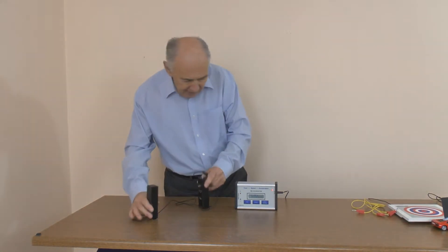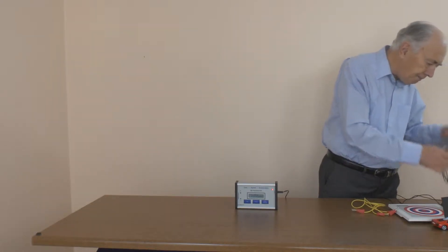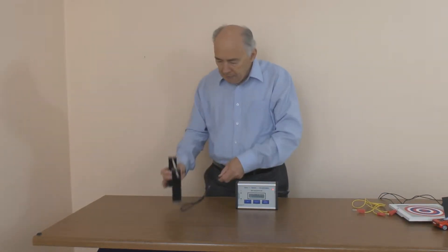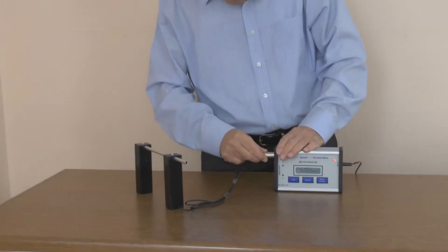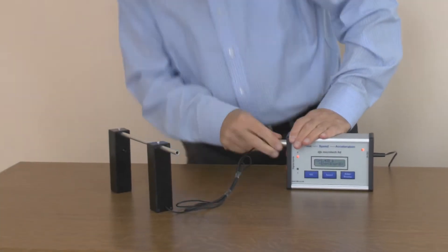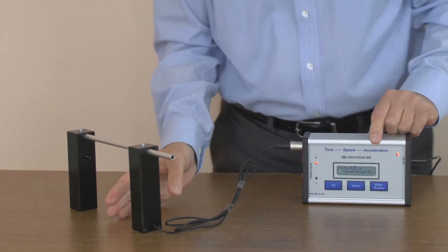We have another type of light gate called a light bridge. The light bridge, these are fixed, and you can see if I cut this on and off.